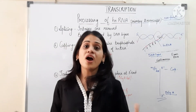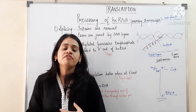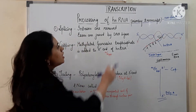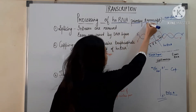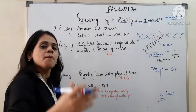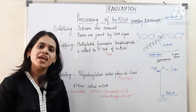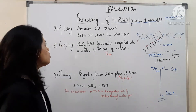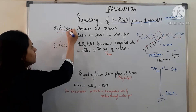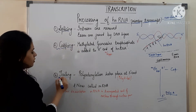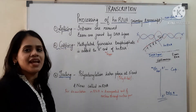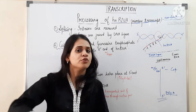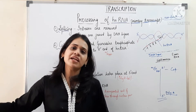After the process of transcription, the RNA we get is non-functional. That RNA is called hnRNA or primary transcript. To process and mature this hnRNA into functional RNA, it will undergo three steps: the first is splicing, the second is capping, and the third is tailing. After splicing, capping, and tailing, the RNA goes from non-functional to functional, ultimately producing proteins.